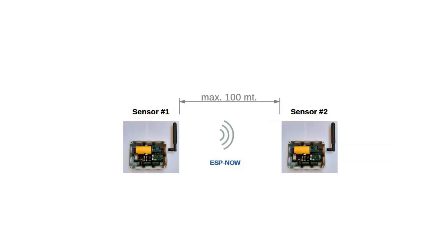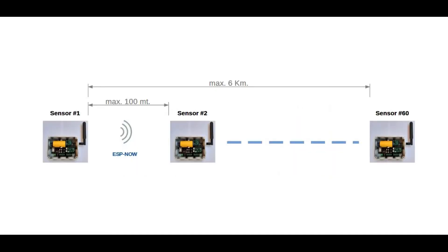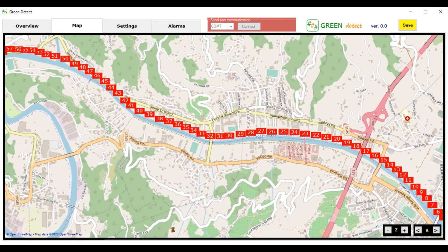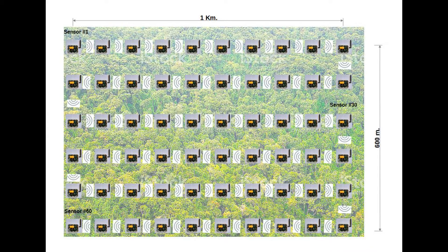The maximum suggested distance between one sensor and the next is 100 meters. Therefore, the network can develop linearly for a total length of 6 kilometers, for example along a river, or you can arrange the sensors in a grid covering an area of 1 kilometer and 600 meters, such as a field or a portion of a forest.